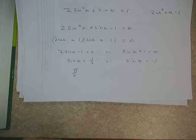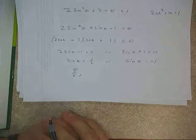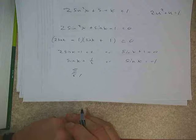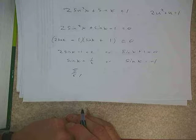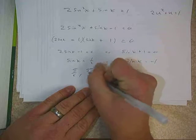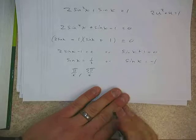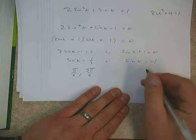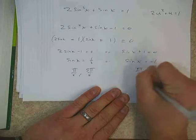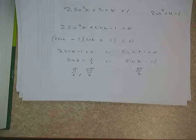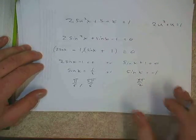Keep in mind they told us to find all the solutions. So where else would sine x equal 1 half? What other quadrant? First and second. So it would be 5 pi over 6. And where does the sine equal negative 1? The sine equals negative 1 at 3 pi over 2.